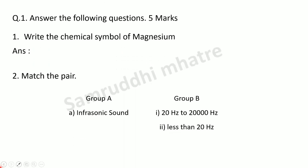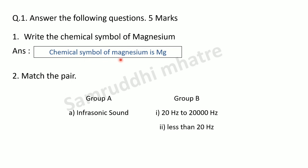The first question in this pre-test is: answer the following questions for 5 marks. First question asked: write the chemical symbol of magnesium. The chemical symbol of magnesium is Mg. Next, match the pair — infrasonic sound: the frequency of infrasonic sound is less than 20 hertz.